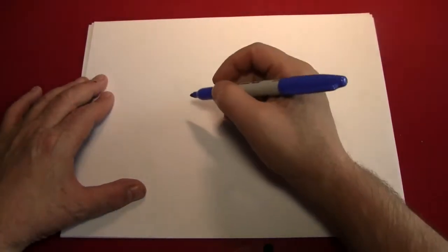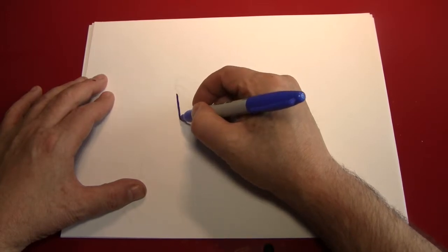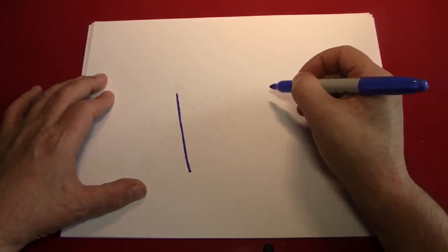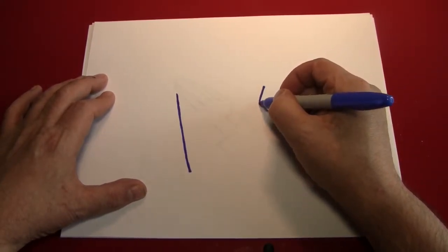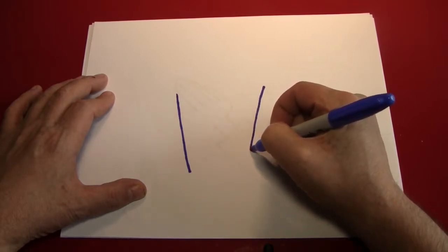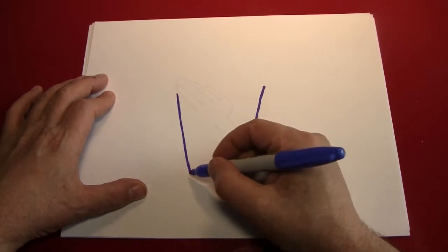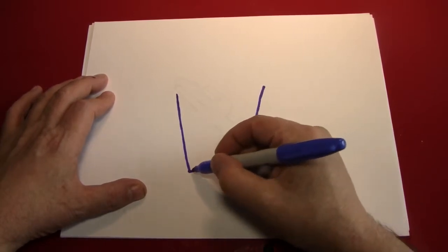I like to start with a nice diagonal line. Not too diagonal. Something like that. Then come over a little bit and make the opposite line, a diagonal line going back the other way.